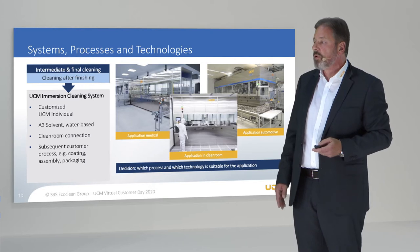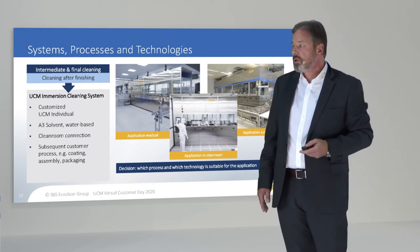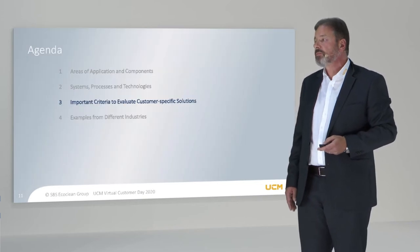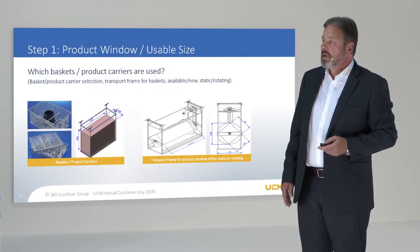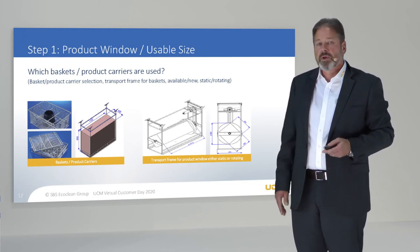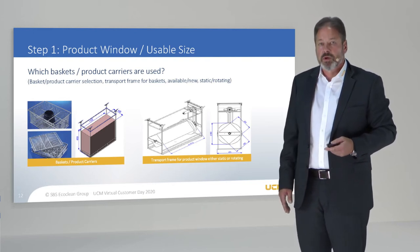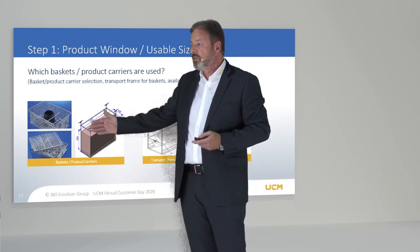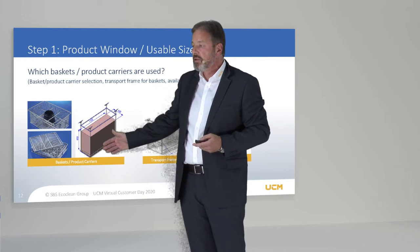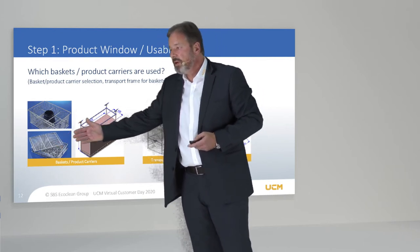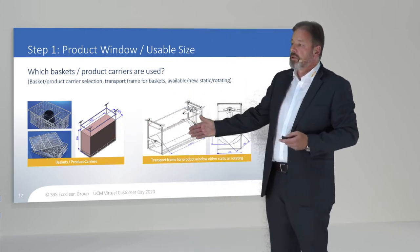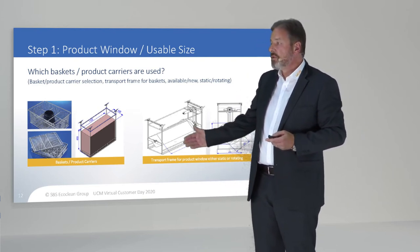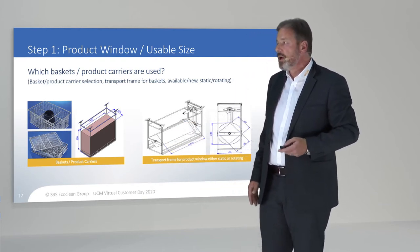It is very important to decide which process and technology is suitable for the application when we talk about the equipment inside the tanks. We start with a basket or product carriers and the use dimensions we want to clean. We have to define the outside dimension of our basket, depending on the basket we want to clean and also for the product placed in the baskets. This depends on the geometry and having the right equipment inside the machine to clean during rotation.